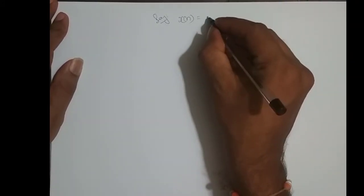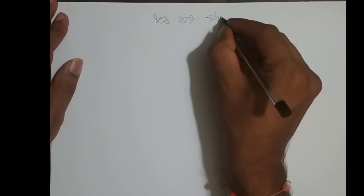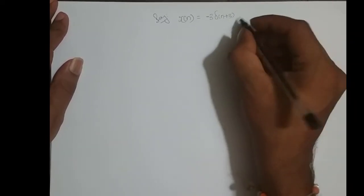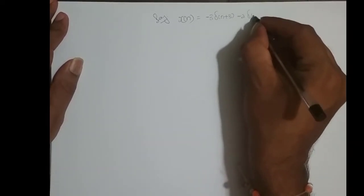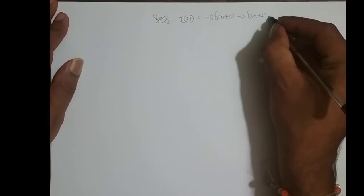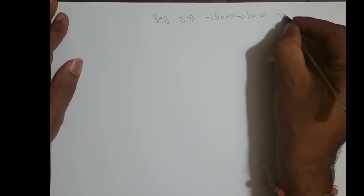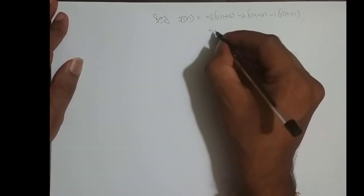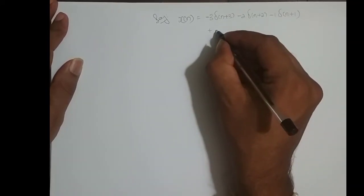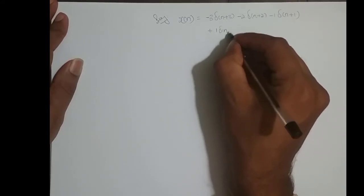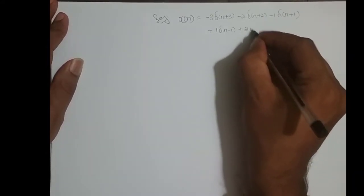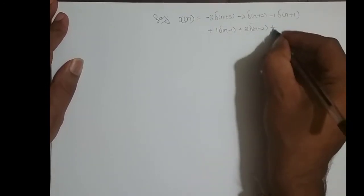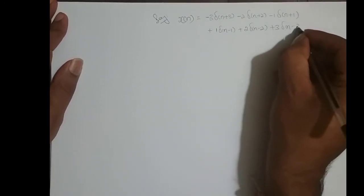So say x of n is equal to minus 3 times delta of n plus 3, minus 2 times delta of n plus 2, minus 1 times delta of n plus 1, plus 1 times delta of n minus 1, plus 2 times delta of n minus 2, plus 3 times delta of n minus 3.